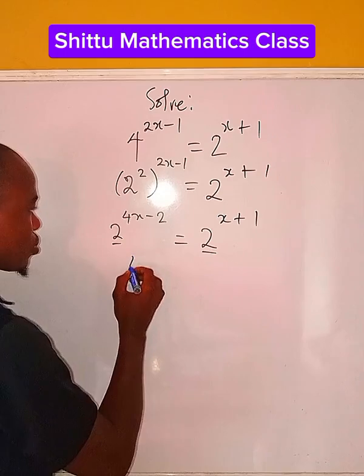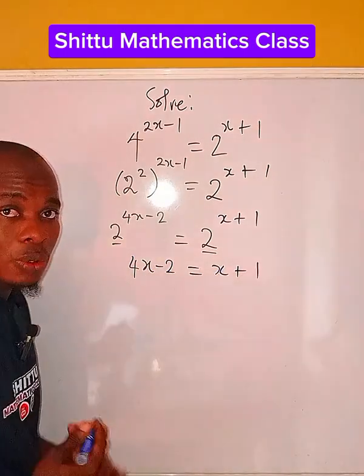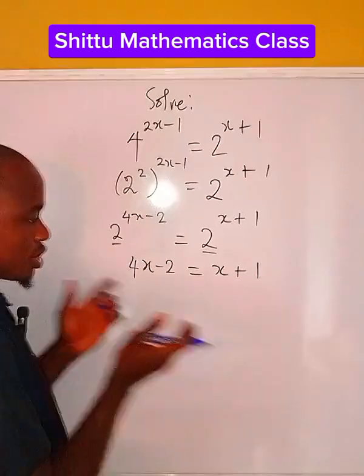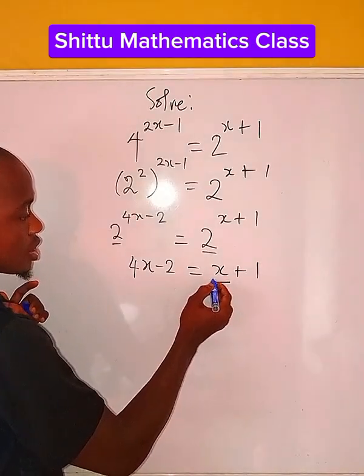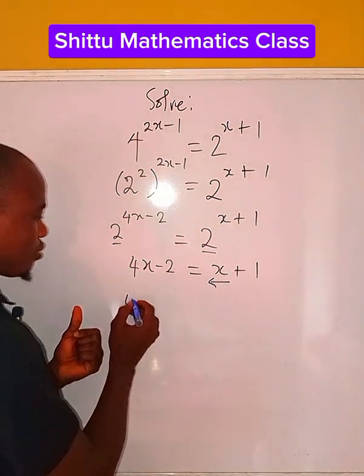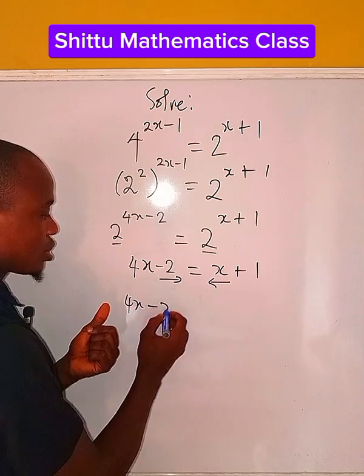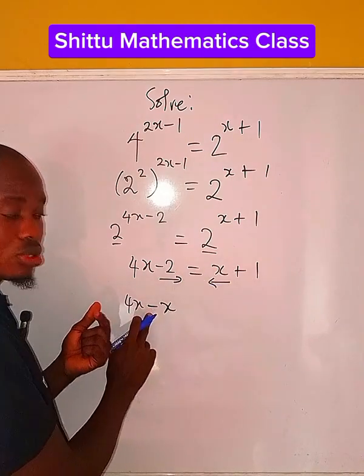The bases are the same, so we're going to equate the exponents. So now what are we going to do? We'll collect like terms, take x on one side. So this x will be coming to the right-hand side. So look at the arrow coming down here, 4x and this will be going to the right-hand side. Minus x, because it's coming down here to change to negative.